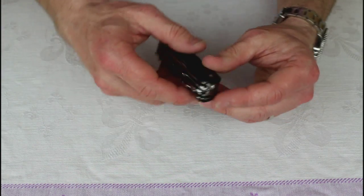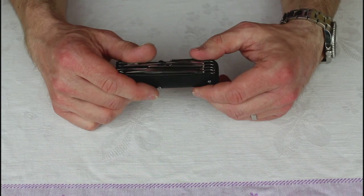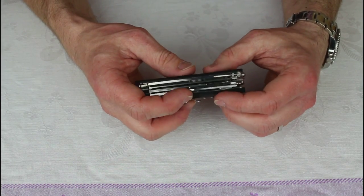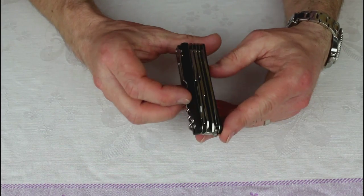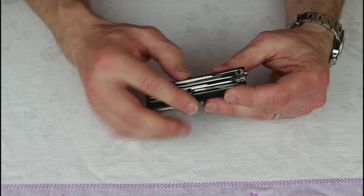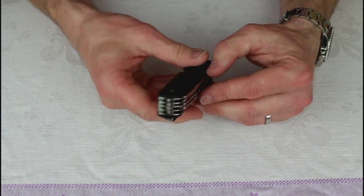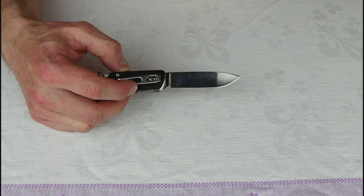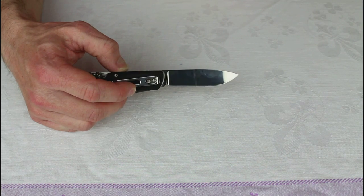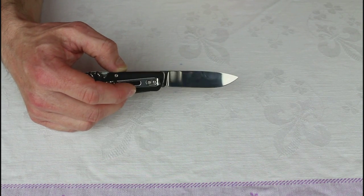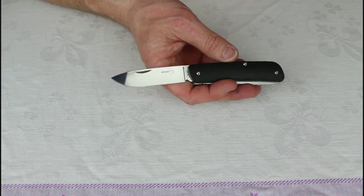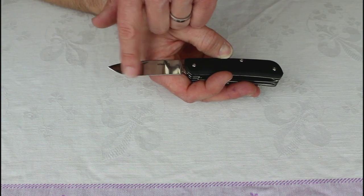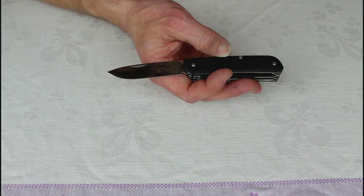So as I say, a nice little tool, and if we just run through the different functionality on this, and my cat doesn't completely interrupt us, we'll move forwards. Okay, so probably the star of the show is the main blade, a good spear point, I think I'd call that. Nice belly on it. Really nice functional belly, which really helps get into those tasks.